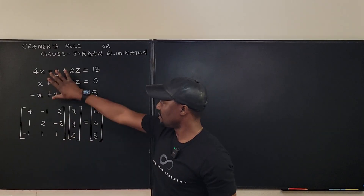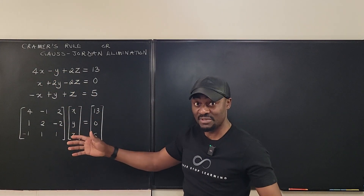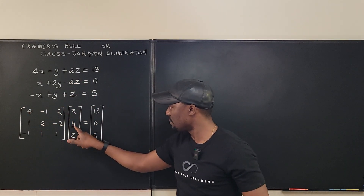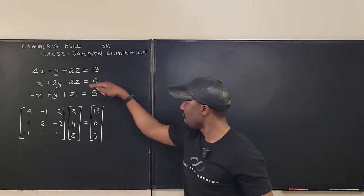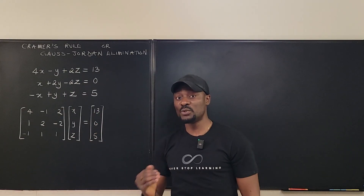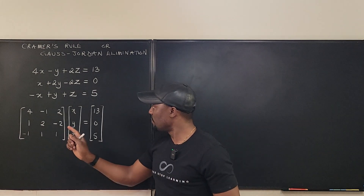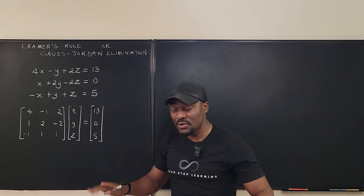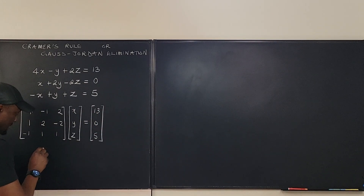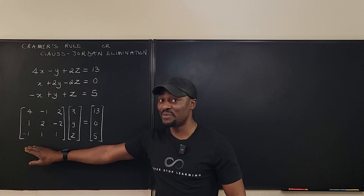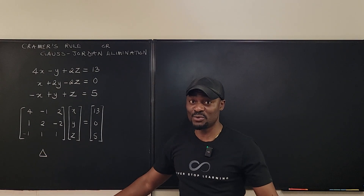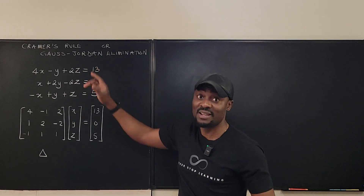This system of equations could have been written this way — it's the same thing — because you take the row and multiply the column, so it's 4 times X minus 1 times Y plus 2 times Z, and the result for the first equation is 13, and the same for the others. Now, Cramer's rule says if the determinant of the original matrix is zero, you cannot use Cramer's rule — that's where the Gauss-Jordan elimination method has an advantage.